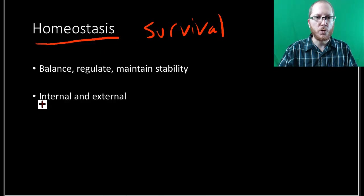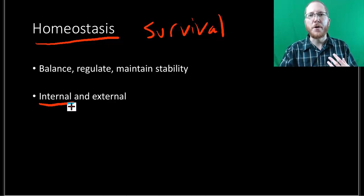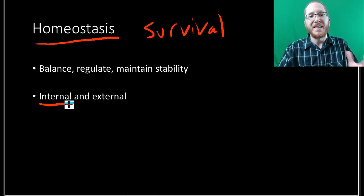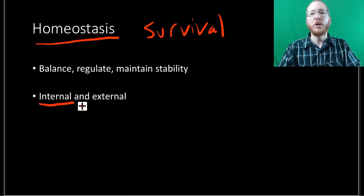And so we are going to constantly control our internal body to make sure that we have the right amounts of sugars, the right temperature, the right amount of water. So if you drink a bunch of water, you urinate. If you don't drink much water, you don't urinate as much. That's your body controlling the amount of water in your body. If there's too much, you get rid of it. If there's too little, you try to keep it.